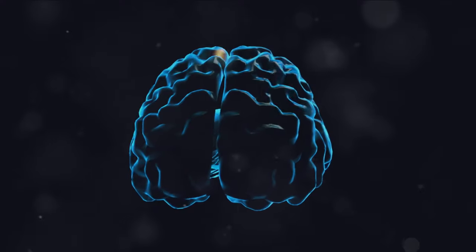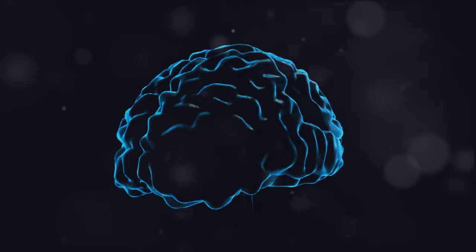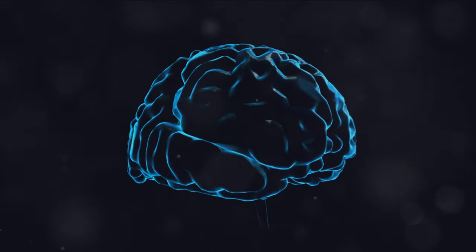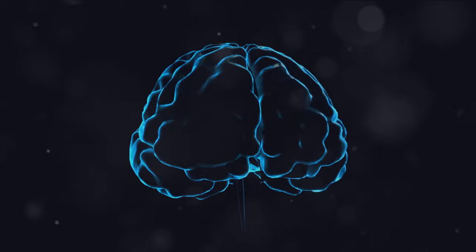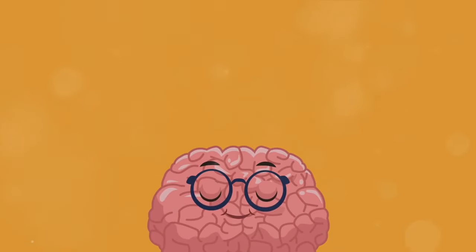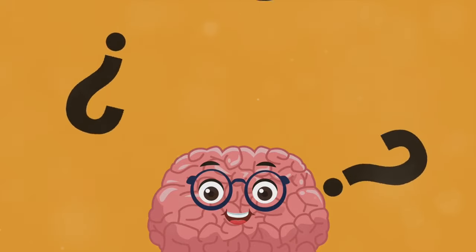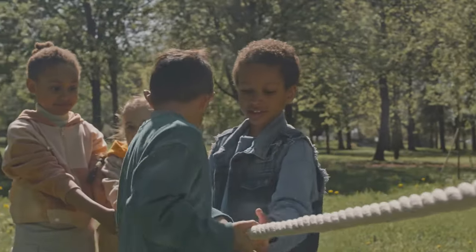You see, the spinning dancer illusion is a classic example of bistable perception, which means the brain can interpret the same image in two valid ways. Here's the fun part. Your brain, being the indecisive fellow that it is, can't settle on just one interpretation.